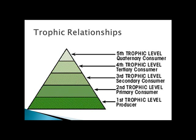Once you get to secondary consumer and above, you can have either carnivores or omnivores. For example, a black bear is a tertiary, or even sometimes a quaternary consumer. It is an omnivore and the top of its food chain, eating both plant and animal matter at all different levels of the trophic pyramid.